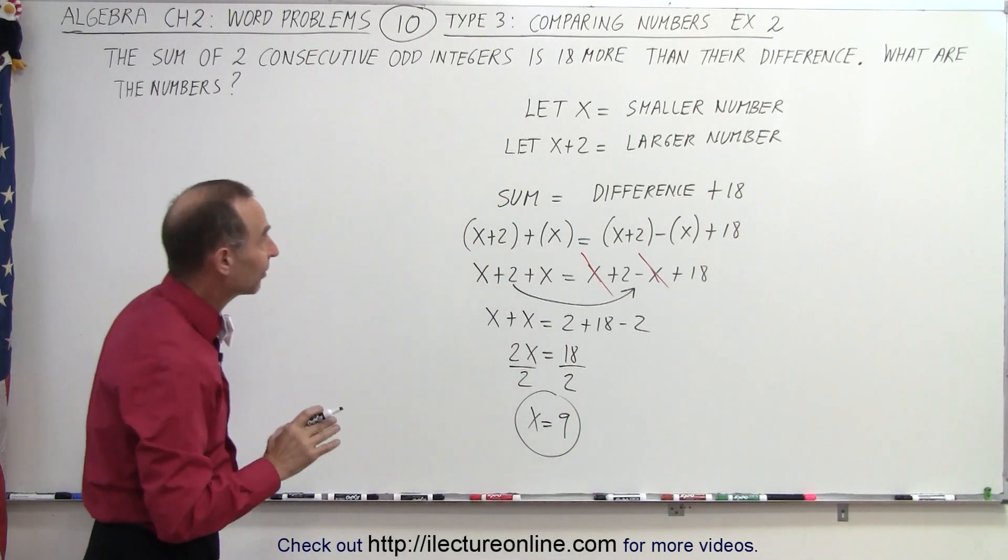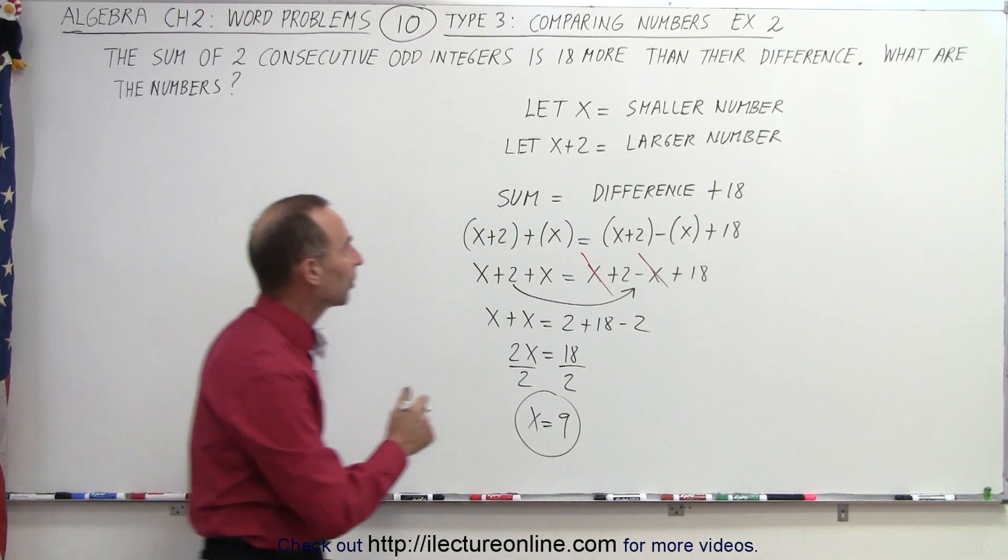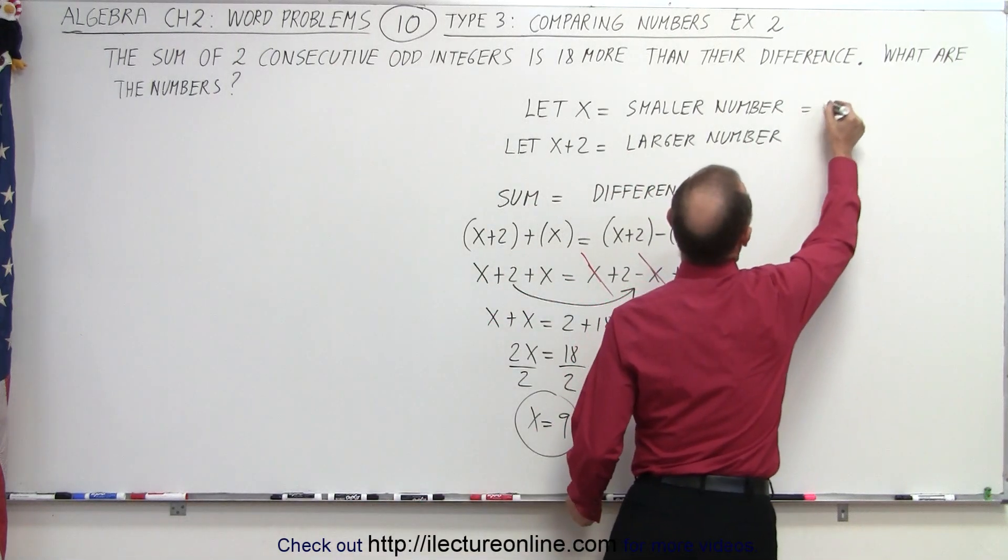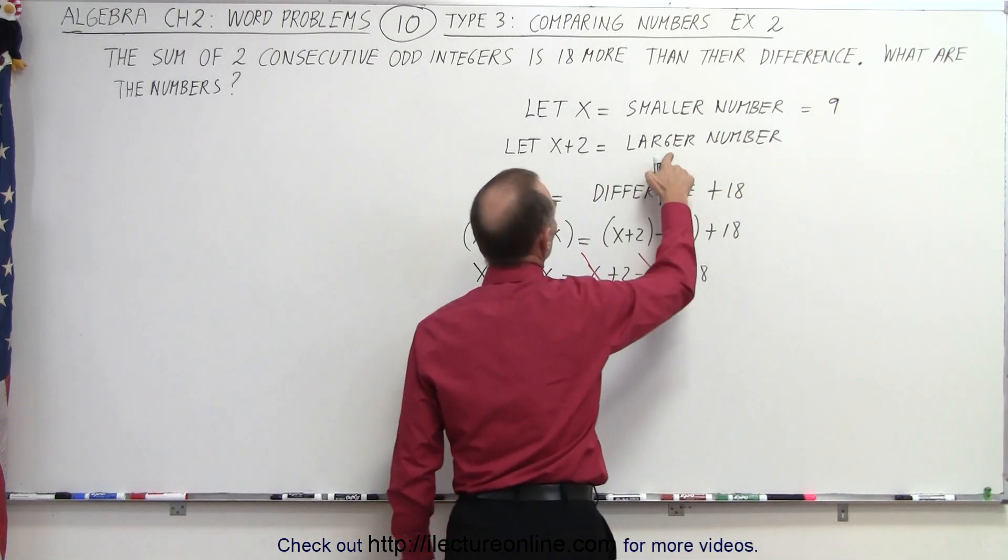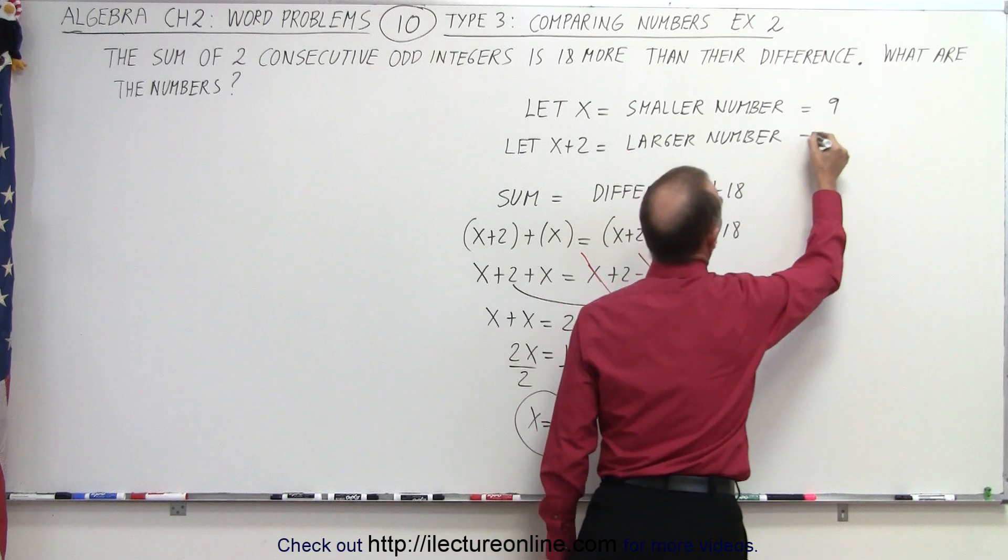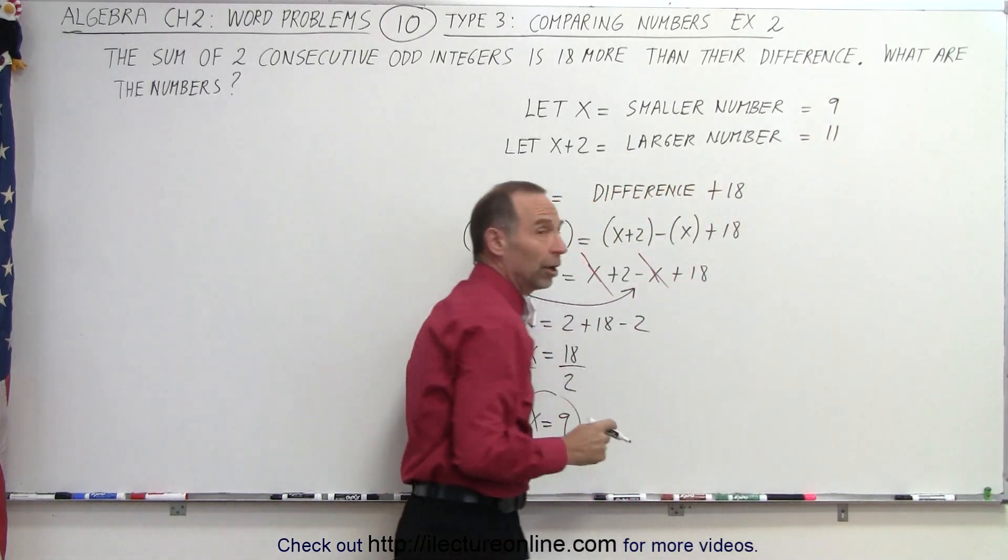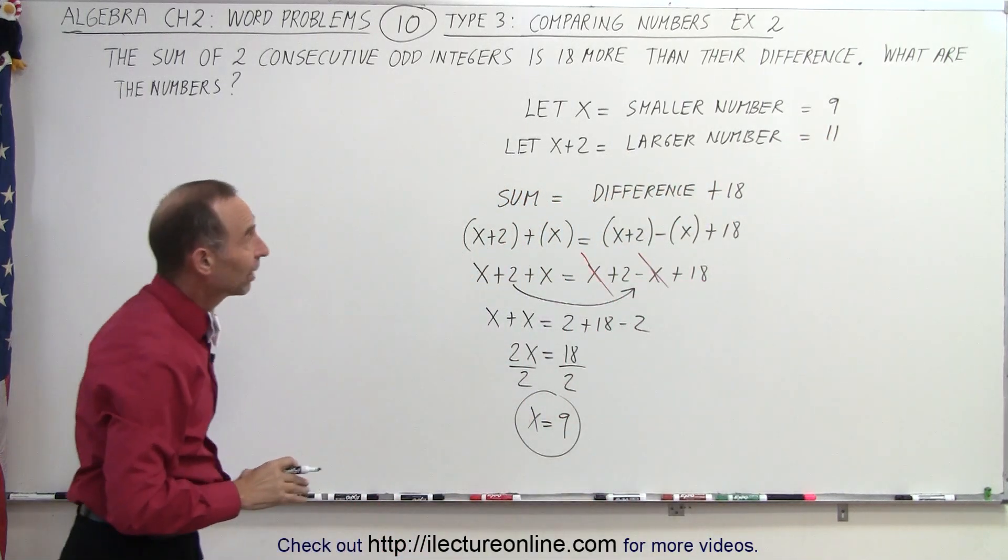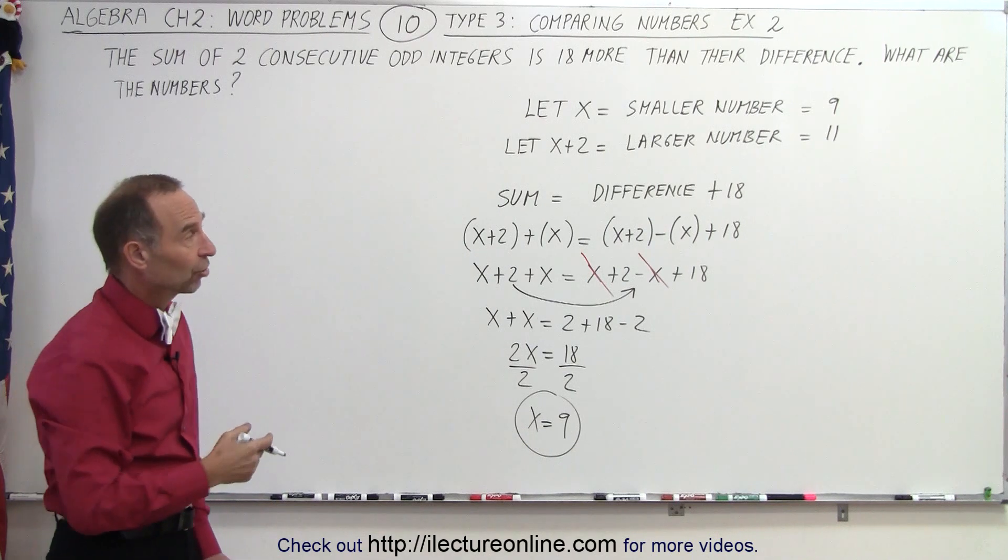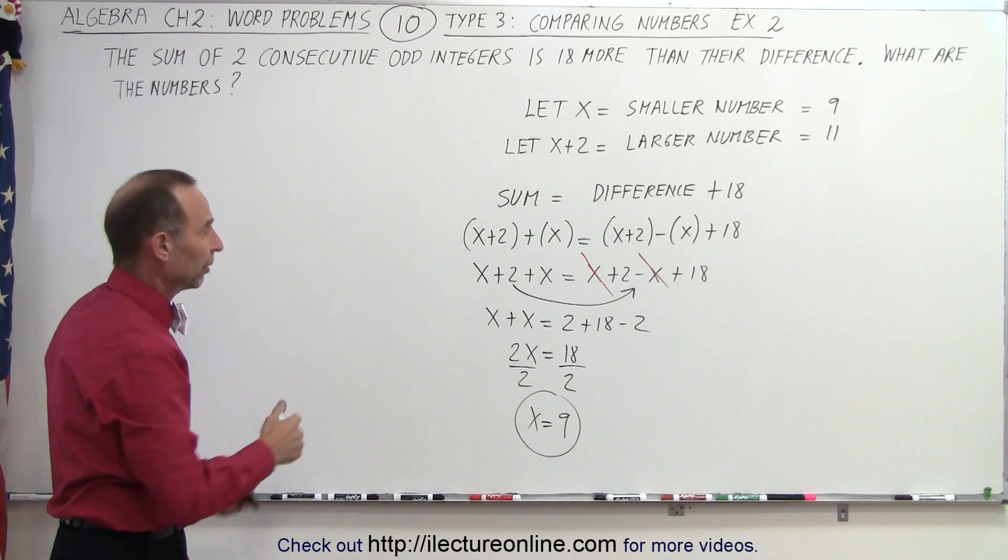Then we come up here and we recognize that x was defined as a smaller number. So the smaller number is equal to 9. And the larger number, which is 2 more, therefore has to be 11. And sure enough, they're both odd integers and they're consecutive odd integers. 11 is the next odd integer compared to the first one.